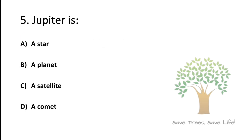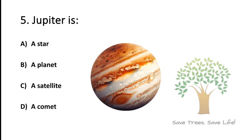Question number 5. Option A: A star. Option B: A planet. Option C: A satellite. Option D: A comet. So the answer is option B, a planet.